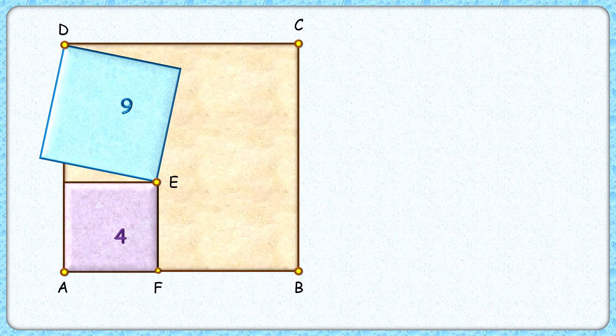Let's check this very simple yet very interesting solution. Here the area of the purple square is four centimeters squared, so each side length will be two centimeters. For the blue square, area is nine, so each side length will be three centimeters.